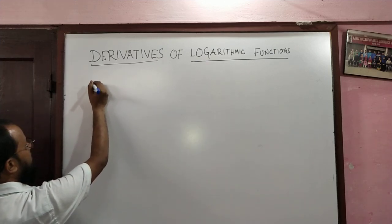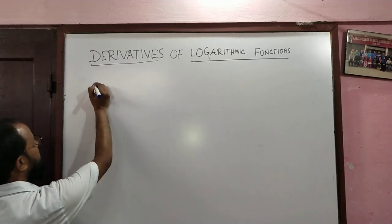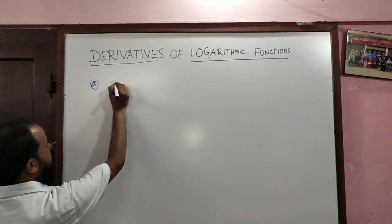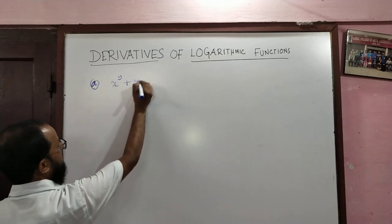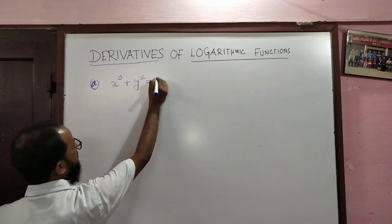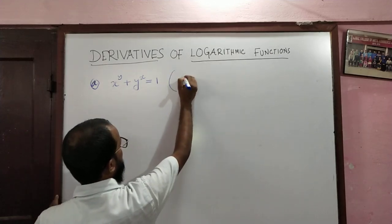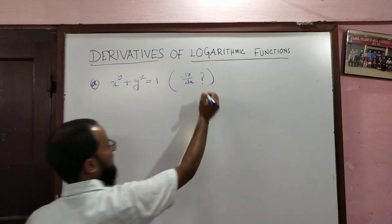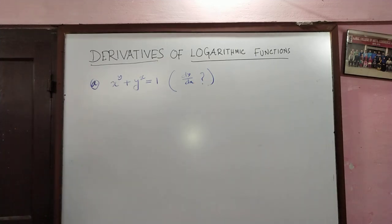The first problem is: x to the power y plus y to the power x is equal to 1. You have to find dy by dx. Your aim is to find dy by dx.